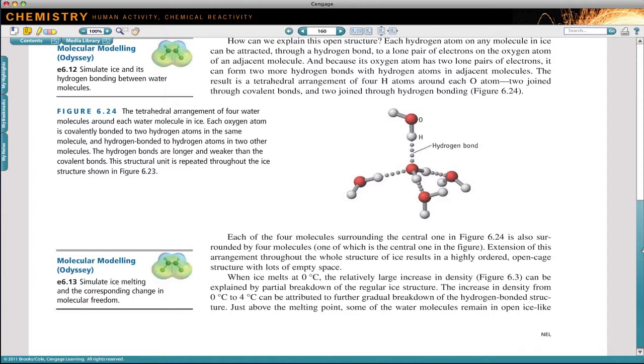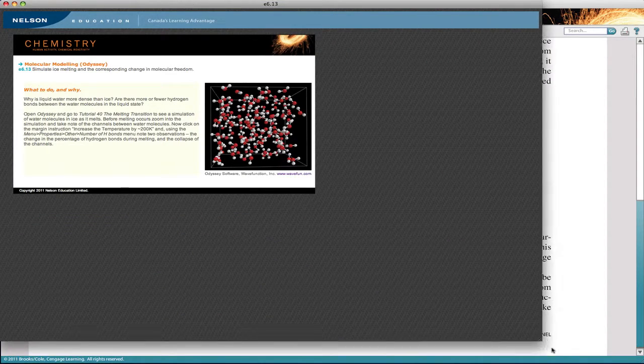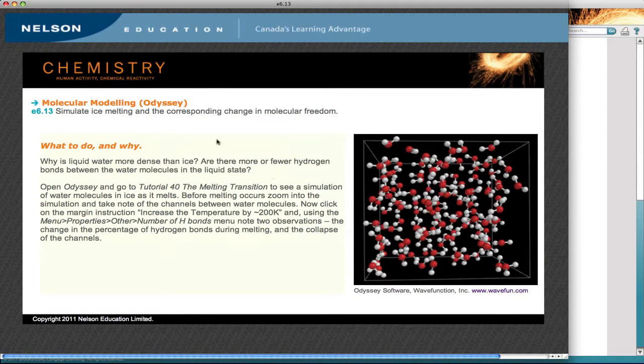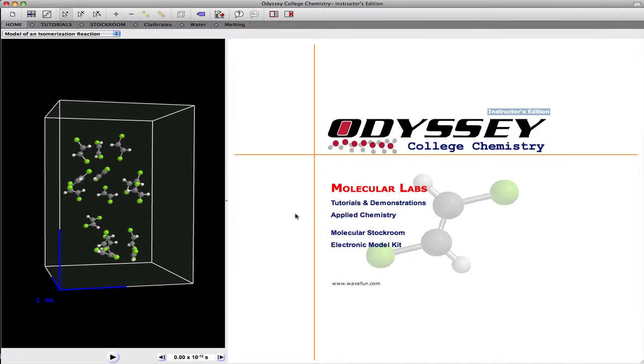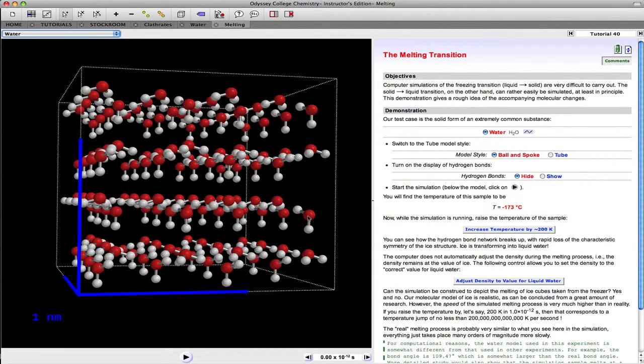For example, eResource 6.13 simulates the changes in hydrogen bonding when ice melts. We open up the springboard. We've got some instructions here on what to do when we get to tutorial 40. And the idea is to look at what happens to the hydrogen bonds during the melting process.